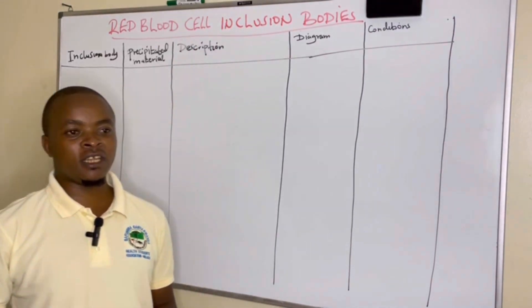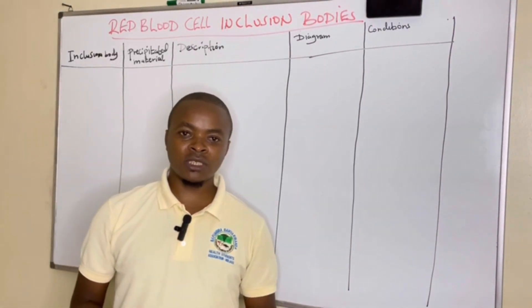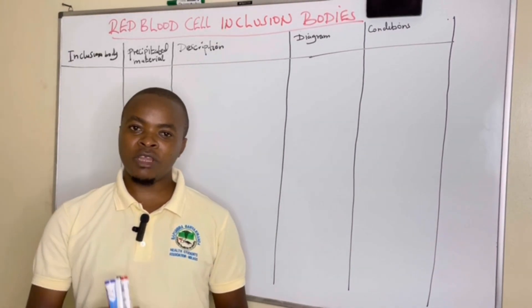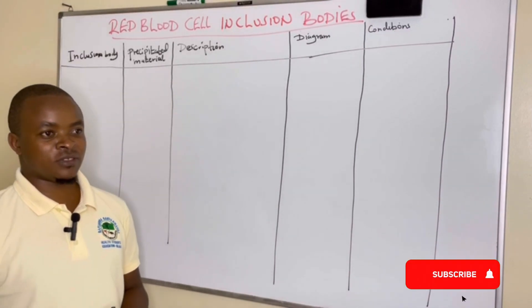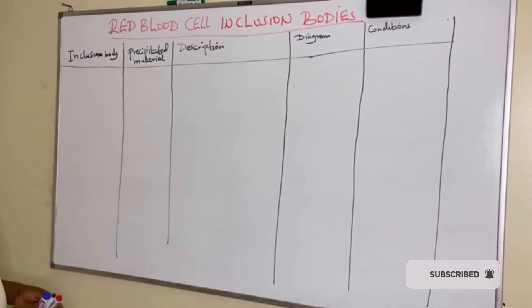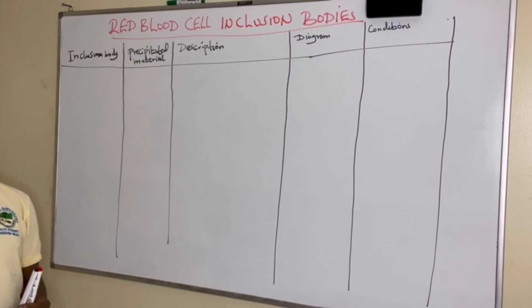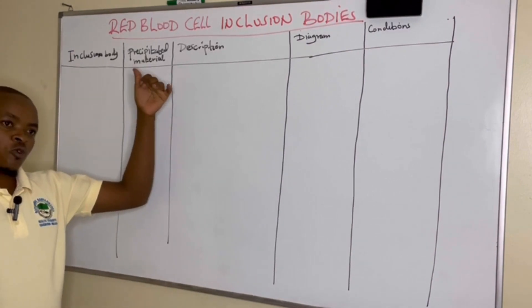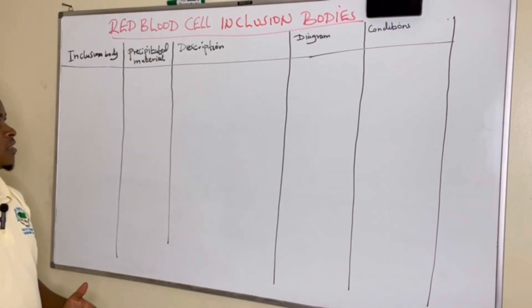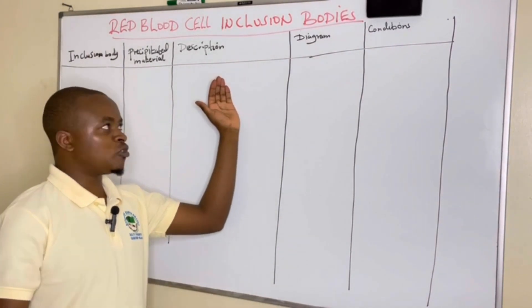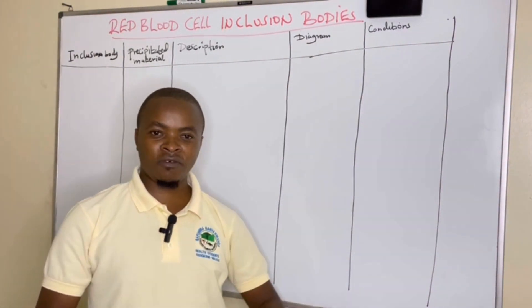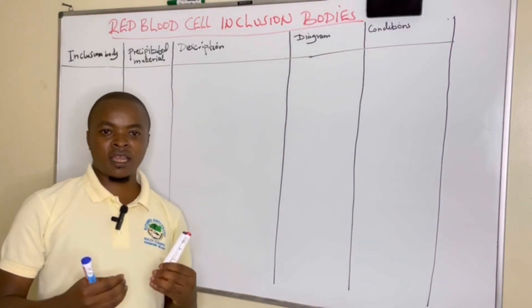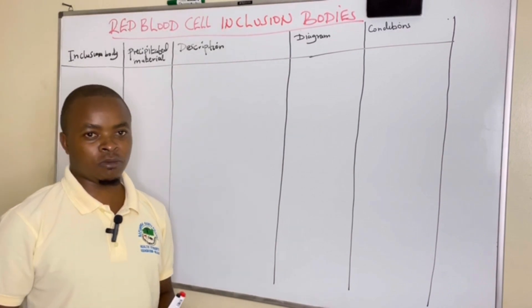We want to discuss them in detail, and we always remind you to subscribe, share, and like the video. In today's session, for each inclusion body we will discuss what material is precipitated, describe the inclusion body with a drawing, and identify the conditions where we can find it under a stained thin film and which disease we might suspect.